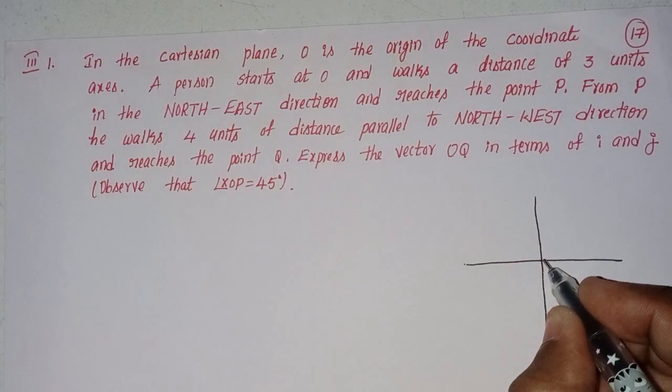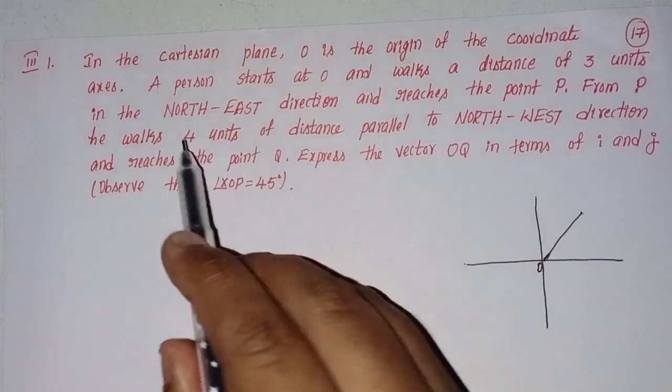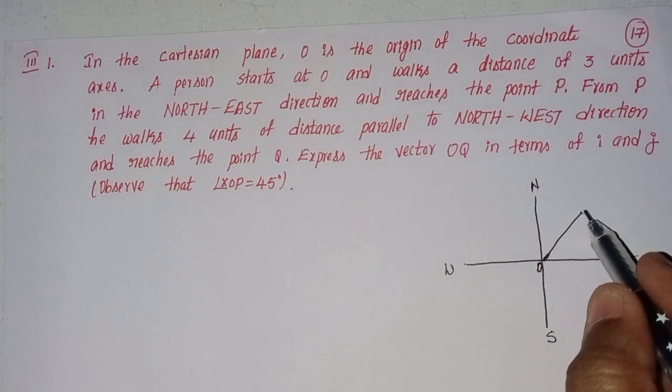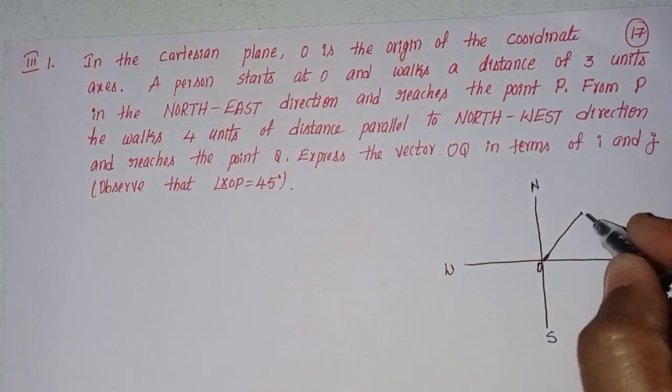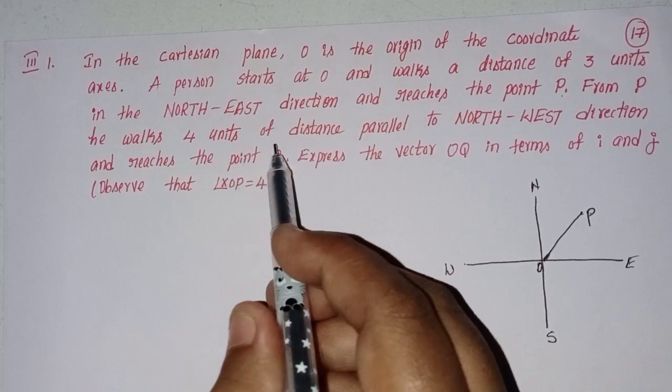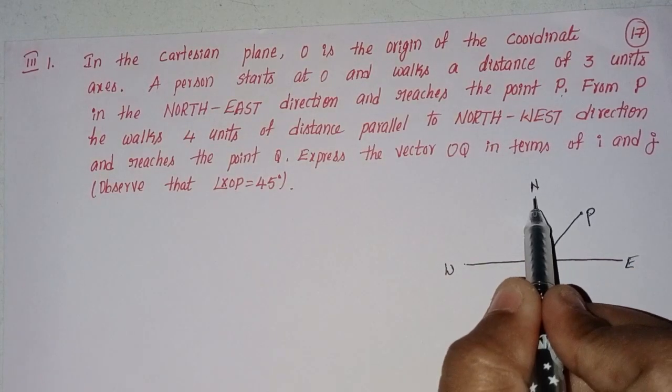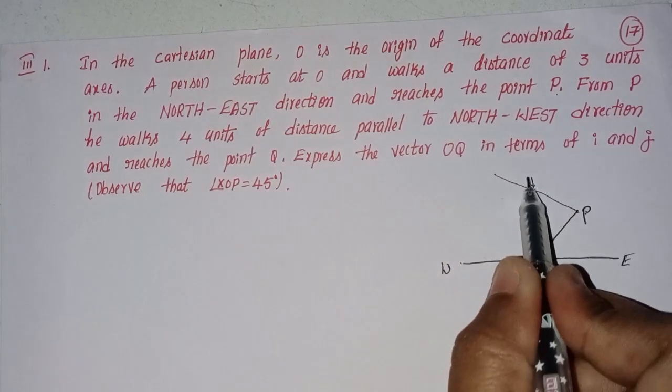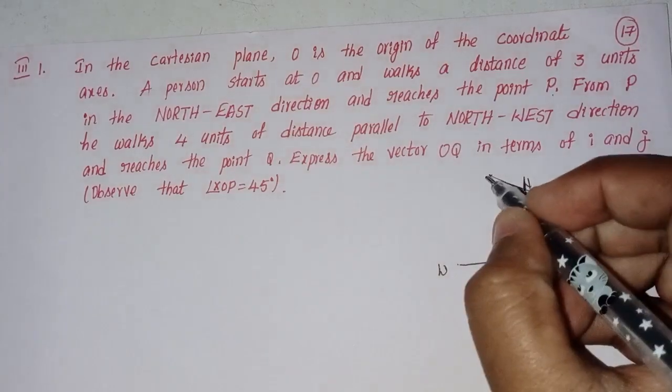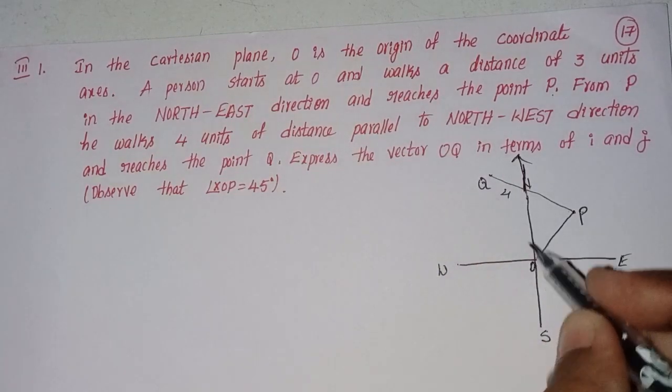From P, he walks 4 units of distance parallel to north-west direction and reaches the point Q. Express the vector OQ in terms of i and j.